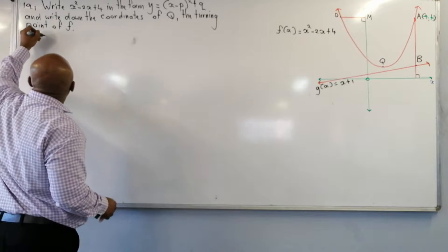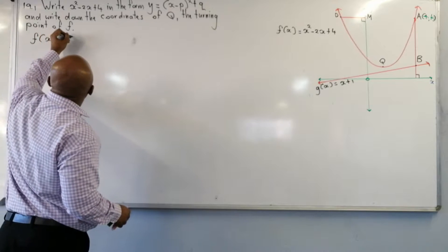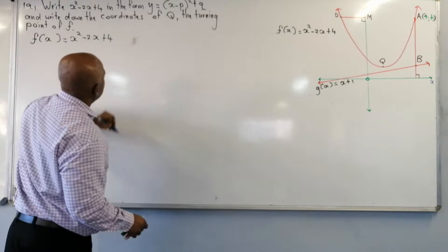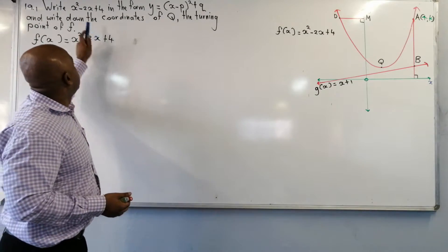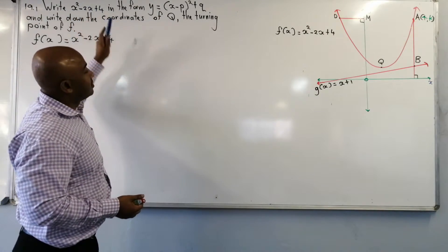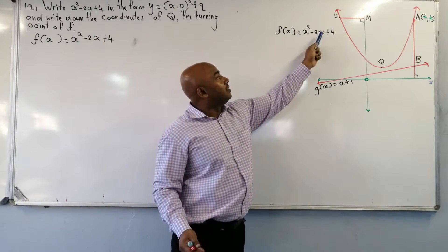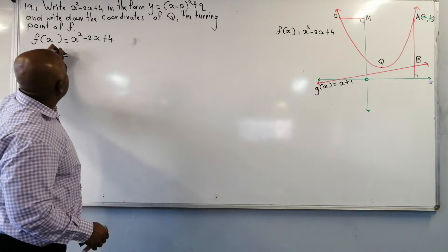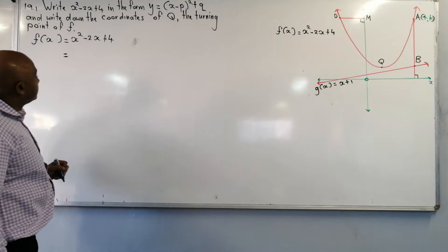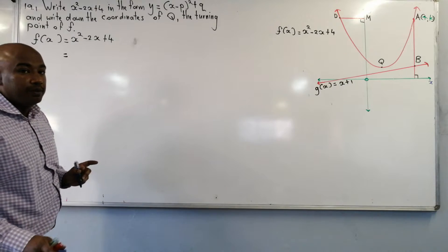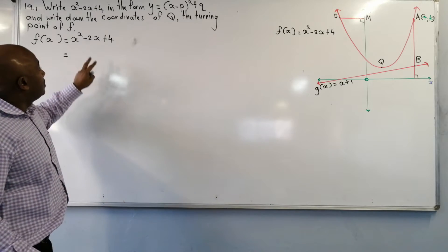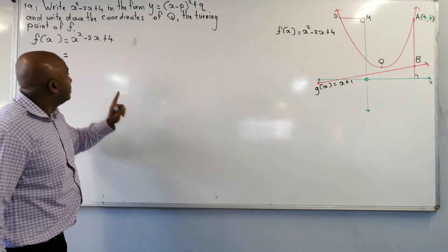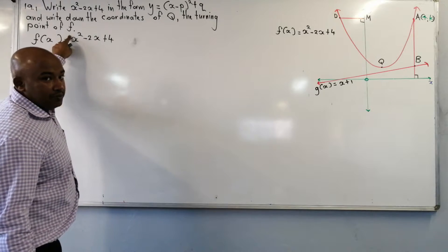We know that f(x) is equal to x squared minus 2x plus 4. So remember, we write x squared minus 2x plus 4 — that's the same thing. Now, completing the square: first of all, the coefficient of x squared must be a positive one. In our case, it is a positive one.